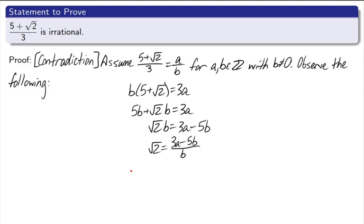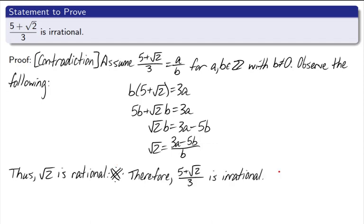Now what did I just accomplish? If you think about it, I get an integer over an integer. So what I just showed was that square root of 2 is rational. Wait, what? We just proved that the square root of 2 is irrational, so we actually just arrived at a contradiction, just like that. Thus, the square root of 2 is rational, and that's a contradiction. Therefore, 5 plus the square root of 2 all over 3 is irrational, and that is the end of our proof.